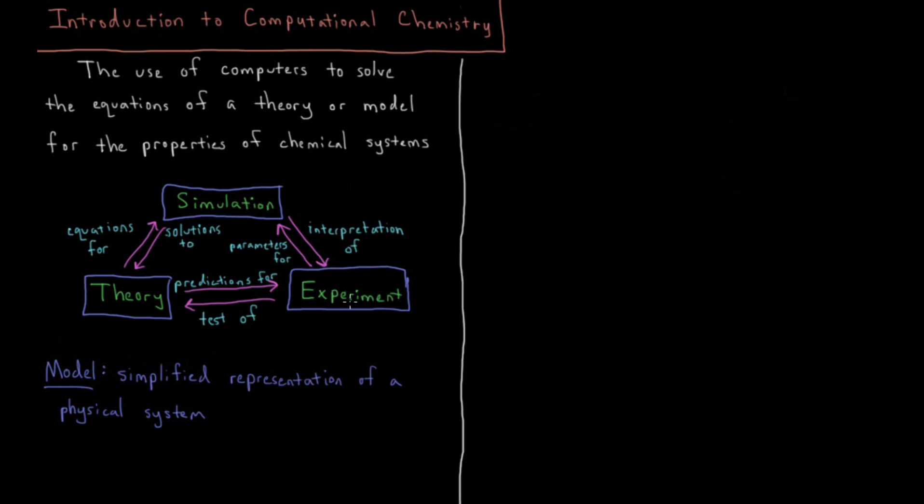So traditionally, science had two main branches: theory and experiment, where theory made certain predictions for experiment, and experiment tested those predictions and refined the theory. When I use the term model up here inside of theory or model, by model I just mean a simplified representation of a physical system.